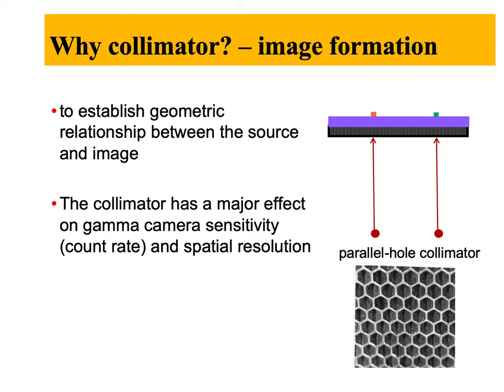Collimators affect the count rate because we see only photons coming parallel to the crystal, and also the spatial resolution. Early camera models had circular collimators, but because of the circular design we were missing some information. Now we have multiple different designs of parallel collimators to improve the count rate — that is, the number of photons detected by the crystal — and also to improve spatial resolution so that images are much clearer.